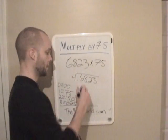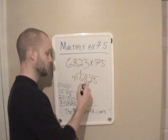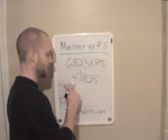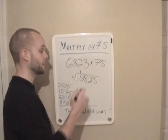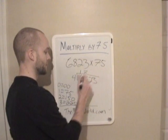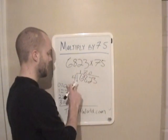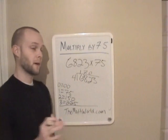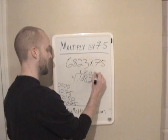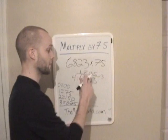So 6,823 divided by 4. 4 goes into 6 one time, has a remainder of 2. So I'm going to write this 2 down next to the 8. 4 goes into 28 seven times, so I'm going to write 7 up here. 4 goes into 2 zero times, and 4 goes into 23 five times. And we have a remainder of 3. Very important.